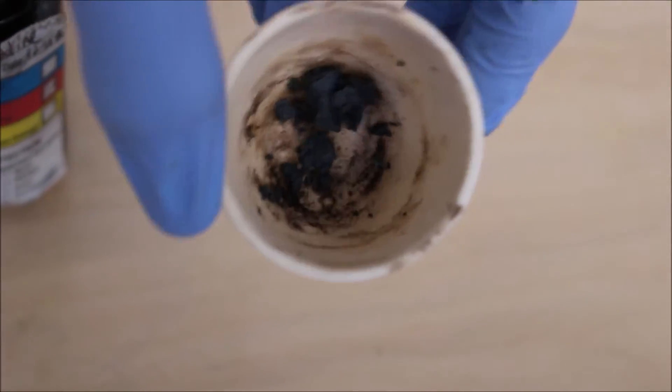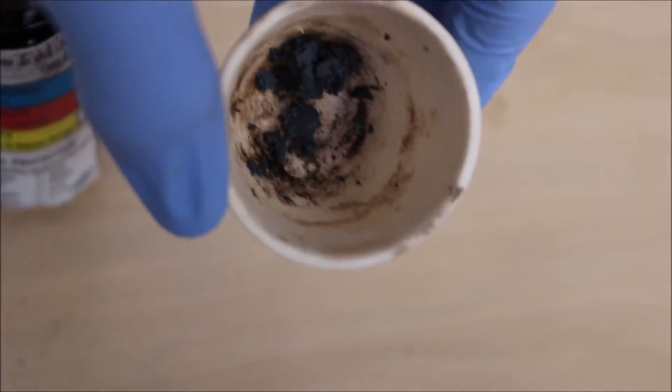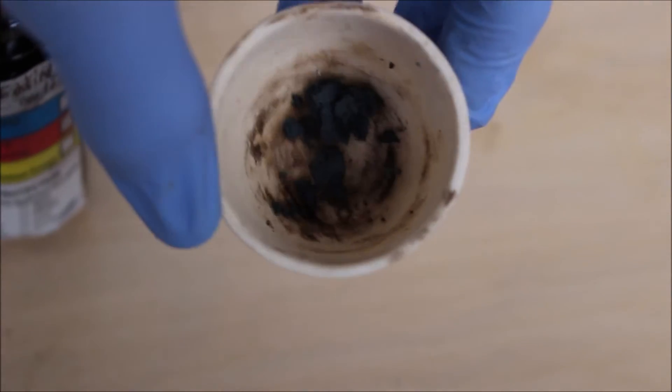So now the iodine is in the crucible, and we're going to start by preheating it, and then we'll just add the sodium in. Okay, now let's remove a small sample of sodium metal.